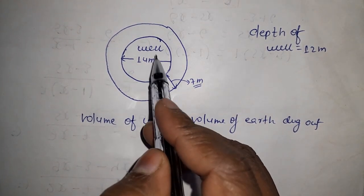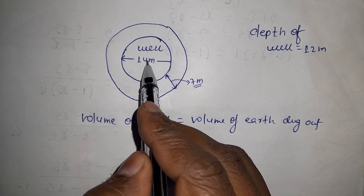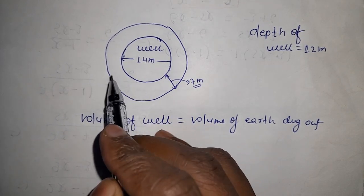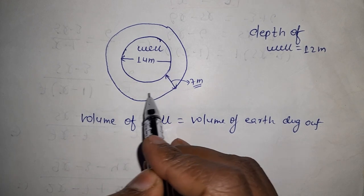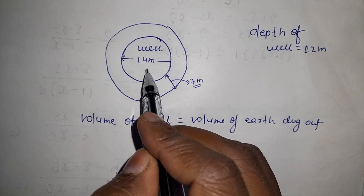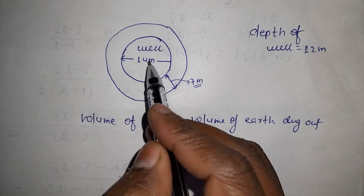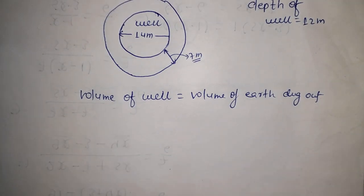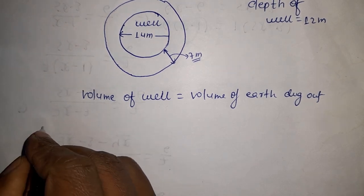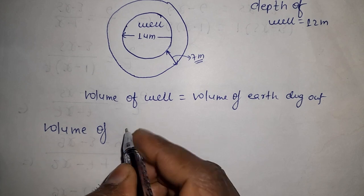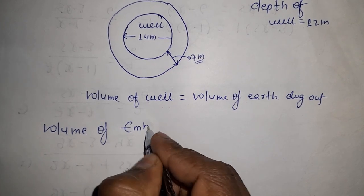Whatever earth was removed from the well, that earth's volume was used to make the embankment. So volume of embankment equals volume of earth dug out.